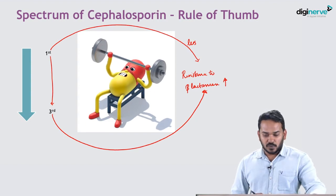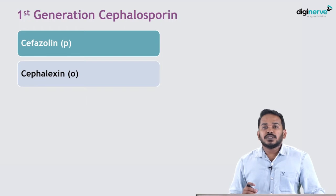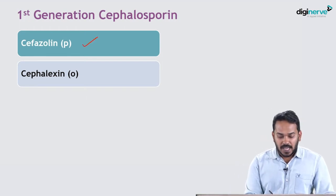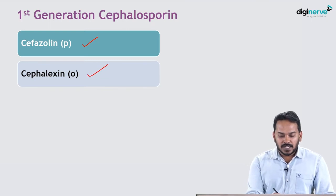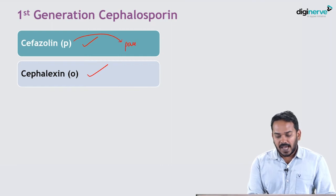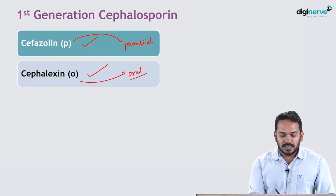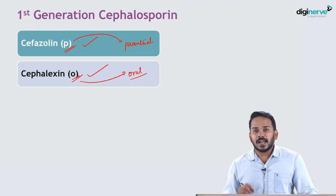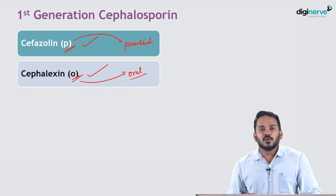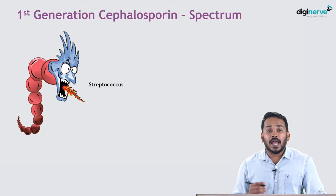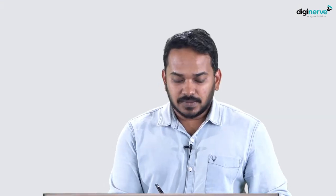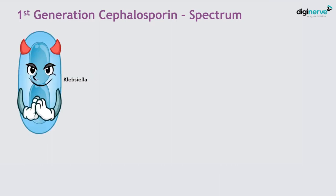We will discuss the different groups of cephalosporins, starting with first generation. Two important first generation cephalosporins are commonly used: cefazolin and cephalexin. Cefazolin is available only as a parenteral preparation whereas cephalexin is available as an oral preparation. First generation cephalosporins are active against Streptococcus, Staphylococcus aureus, Proteus, E. coli, and Klebsiella.